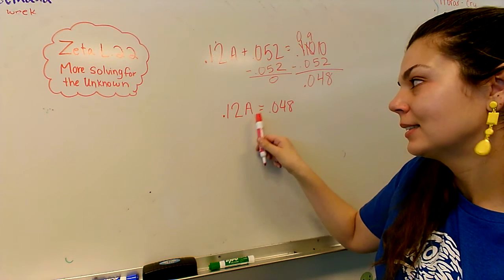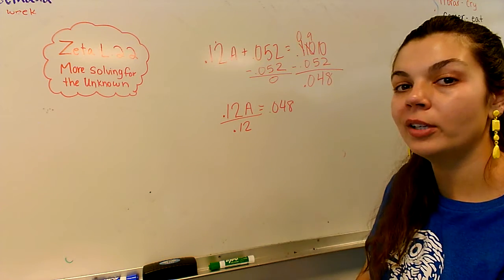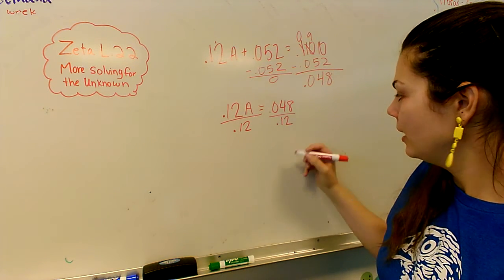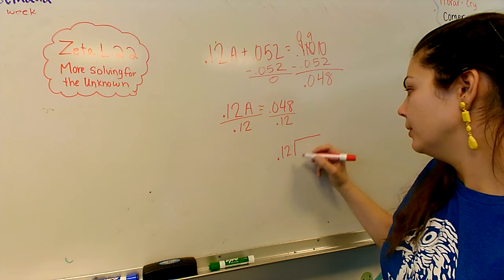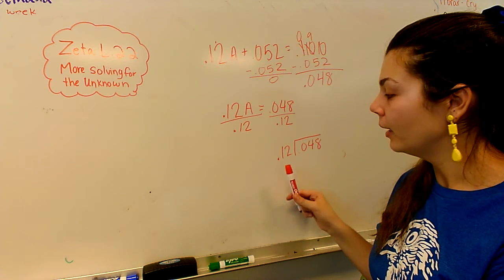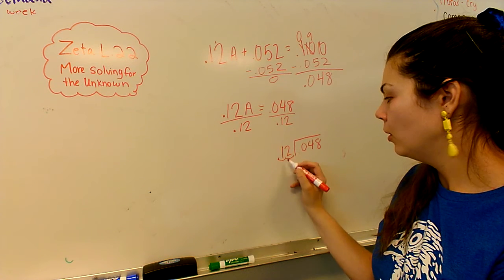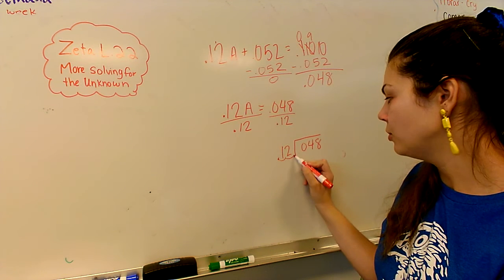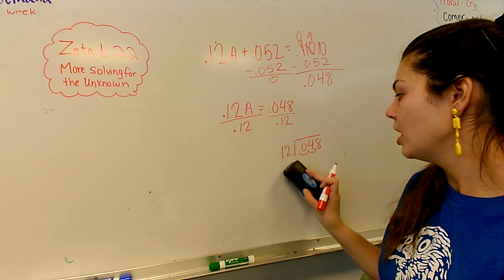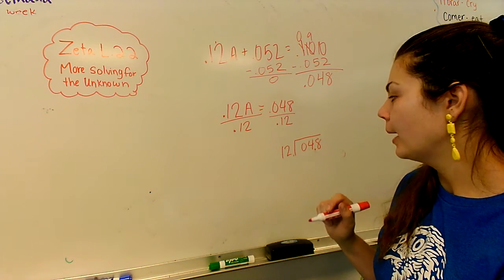Now what do I need to do? I need that variable alone. So I'm going to divide by 0.12a. If I do it to one side, I do it to the other. Okay, now I'm going to divide. 0.12 divided by 0.048. It doesn't matter if there's a decimal anywhere here. It only matters if the decimal is over here. We do not want any decimals there. So we move him 1, 2 spaces over. If we move him 2, we move this one 2. 1, 2 spaces over.